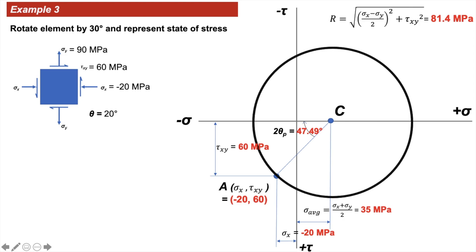Now let's rotate our element by θ = 20°. When we rotate our element by θ = 20°, as discussed earlier, in the Mohr circle we have to rotate it by twice theta, which is 40°.